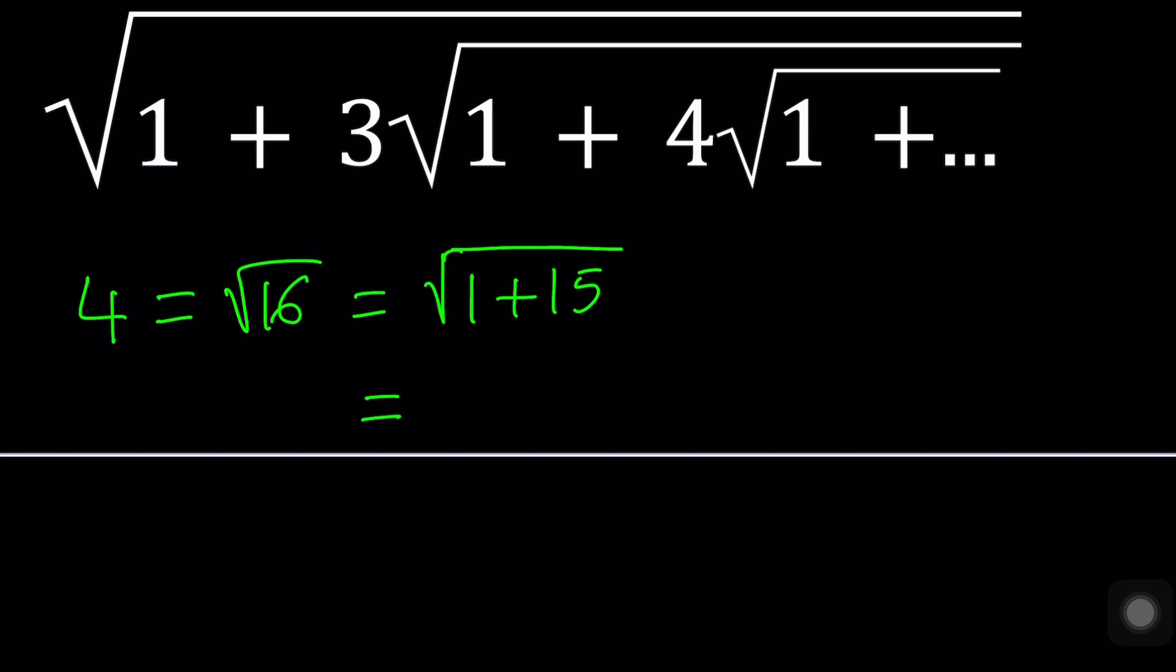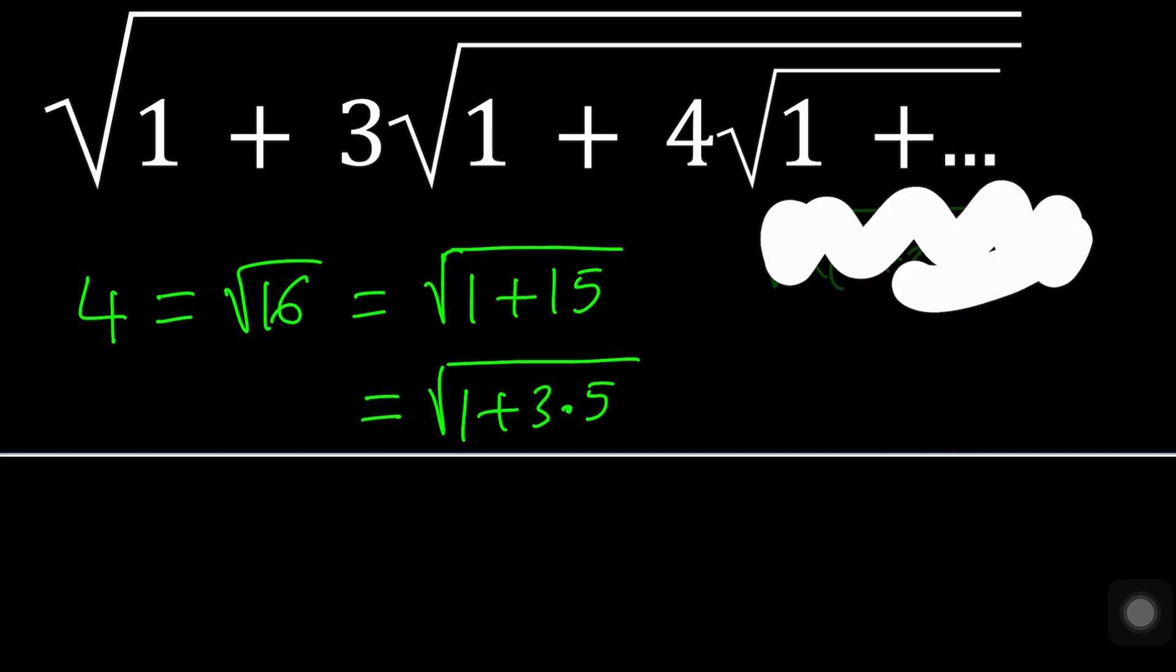The next thing we're going to do is factor 15 into the product of two consecutive odd numbers. In this case it has to be odd numbers because 15 is odd, so it has to be 3 times 5. It's easy to show that when you multiply x by x plus 2 and add 1 to it, this is going to be a perfect square. That's actually the whole idea behind this.